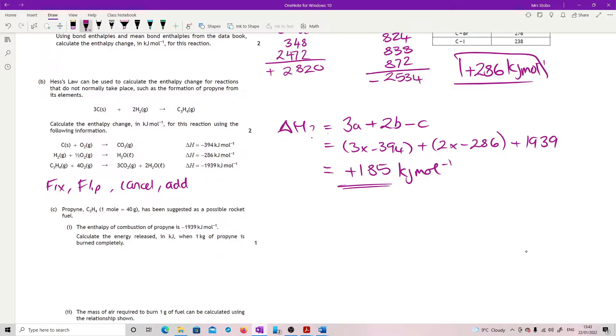We are going to fix and flip the first equation. So I need three carbons here, so three, I don't need to flip it. But three times minus 394. I hadn't written that down somewhere. So this becomes minus 1182. Second equation, fixing, it needs to go to two. So that's two, two, and two, and two times that. So two times 286, that's minus 572 here.